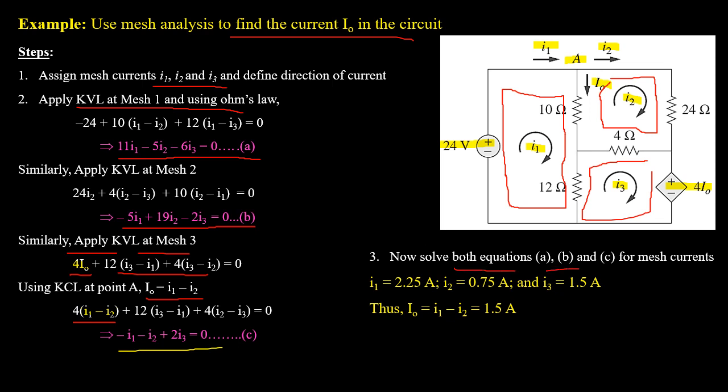As the third step, we solve the system of equations A, B, and C using any method of calculus that is easier. On solving, mesh current i1 equals 2.25 amperes, mesh current i2 equals 0.75 amperes, and mesh current i3 equals 1.5 amperes. The current I0, which passes through the 10-ohm resistor, equals i1 minus i2; substituting the values gives I0 equals 1.5 amperes.